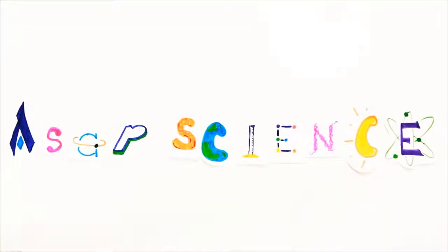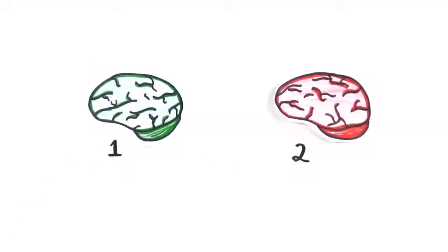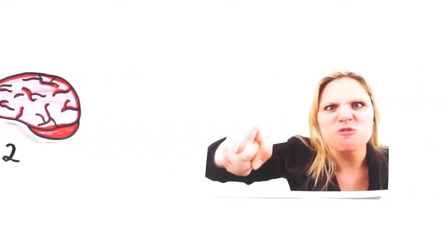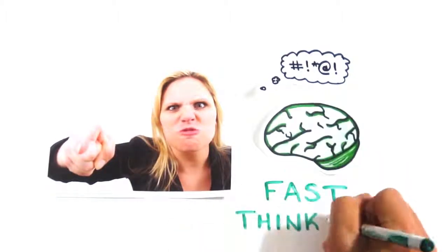You may not realize it, but your brain actually processes information in two very distinct ways. Like when you look at this photo, you instantly know she has blonde hair, is visibly angry, and likely has some choice words to yell. Without any effort, you experienced fast thinking.